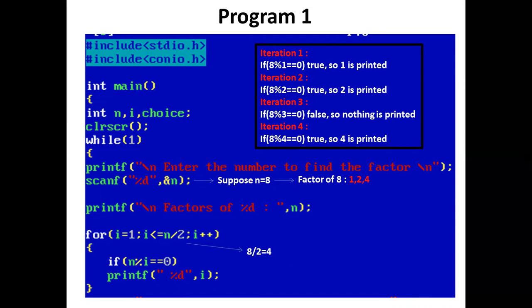Suppose the user enters 8. Now the printf statement prints 'factor of 8'. Now we have a for loop. For i equal to 1, 1 is less than or equal to 4, which is true. So control comes inside the for loop. Now the condition is checked: if 8 mod 1 equals 0, true. So we get our first factor. The printf statement prints 1.